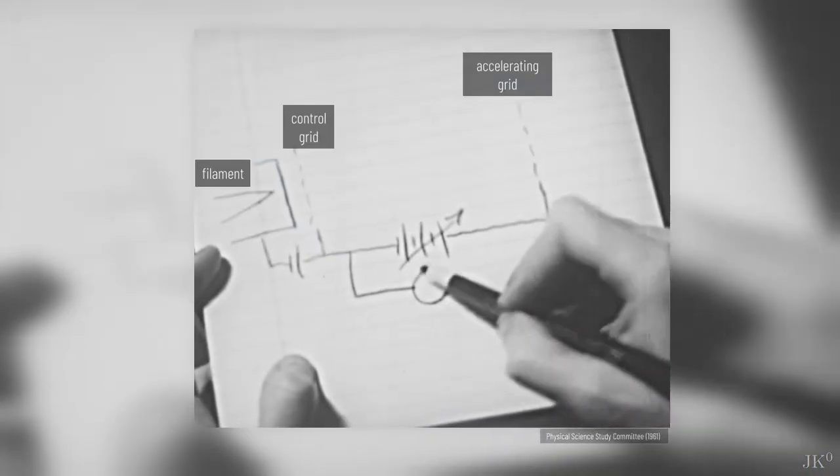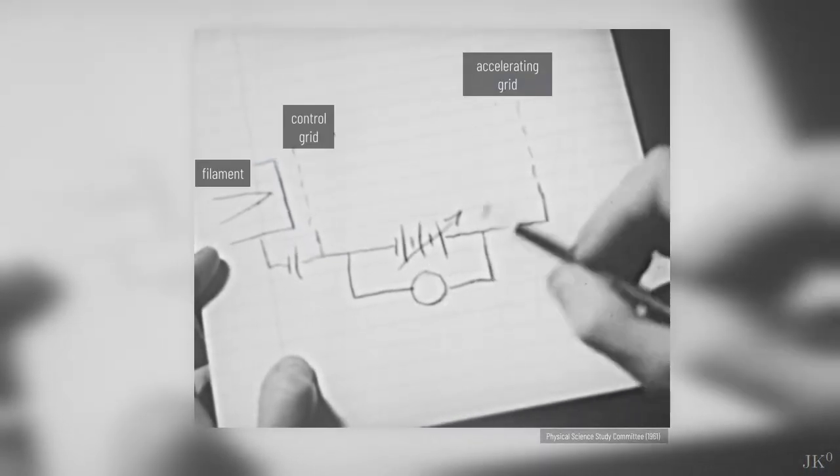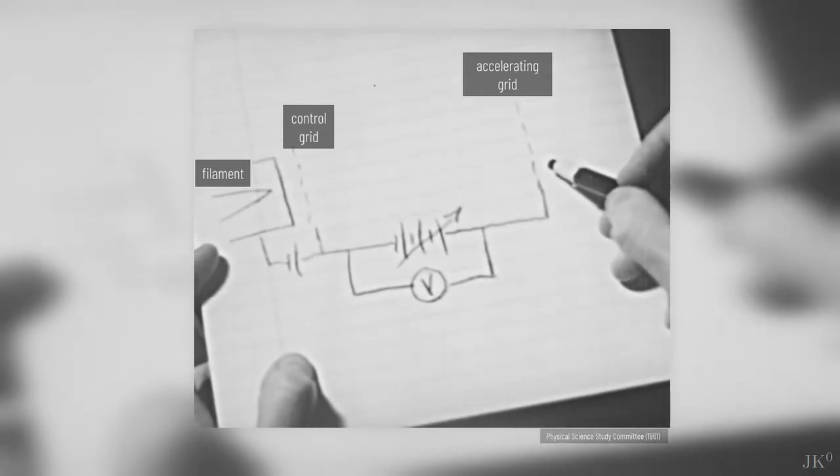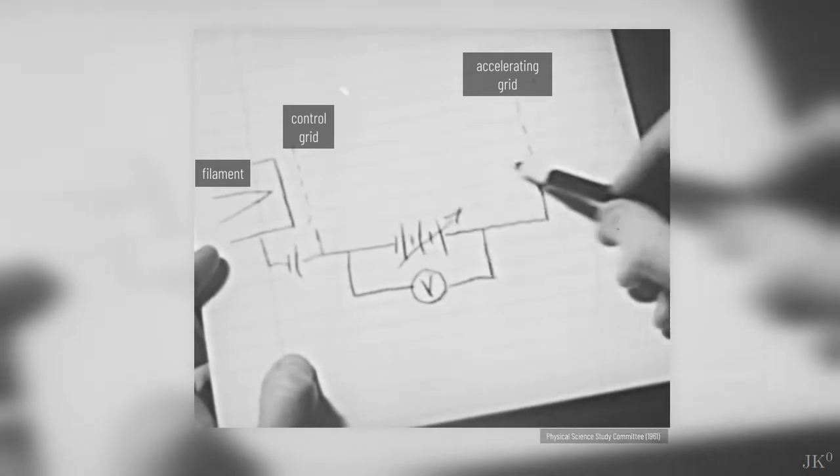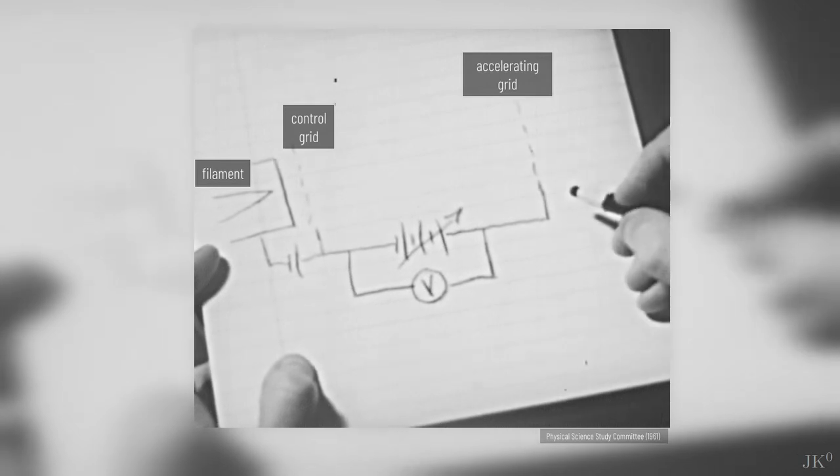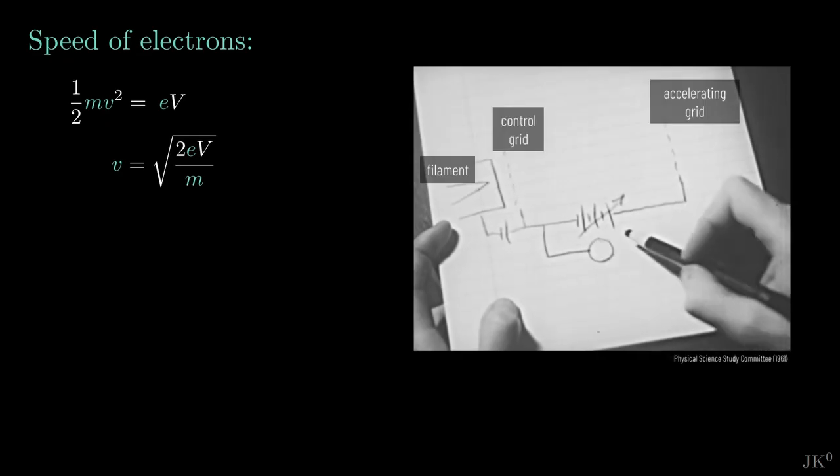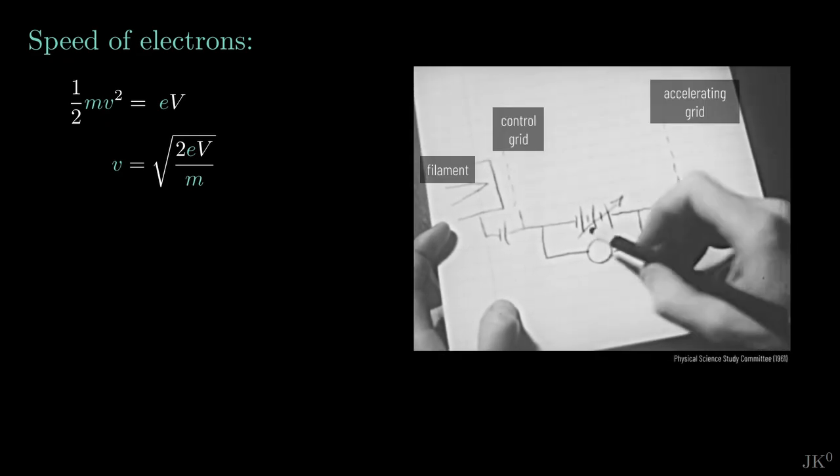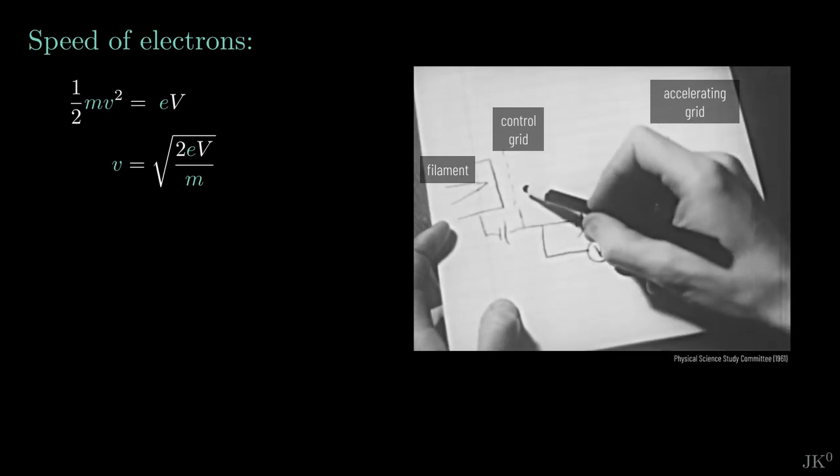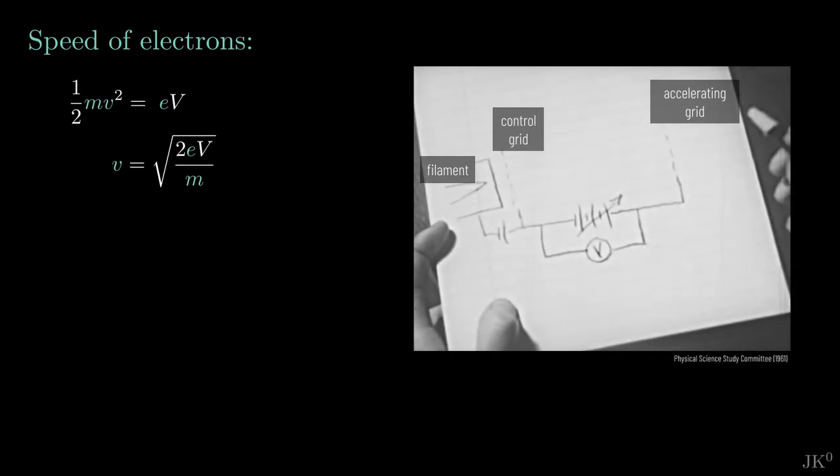Given the potential difference V used to accelerate the electrons, we can calculate how fast they will be moving when reaching the accelerating grid using conservation of energy. The potential energy given by the charge of the electron times the voltage will become kinetic energy one half mv squared, from where we can solve for the speed and find this relation. Franck and Hertz used a variable voltage to analyze the behavior of these electrons over a range roughly between 1 and 15 volts.